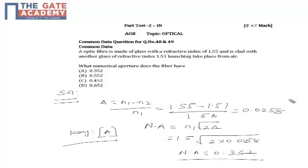The next question is from the topic optical instrumentation, which is a combination question asked for four marks. The first question we will go through: an optical fiber is made of glass with a refractive index of 1.55 and is clad with